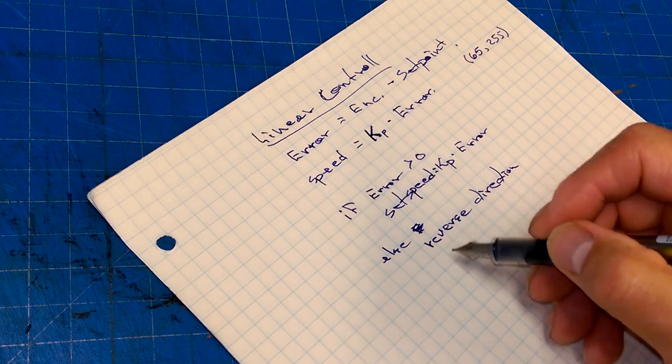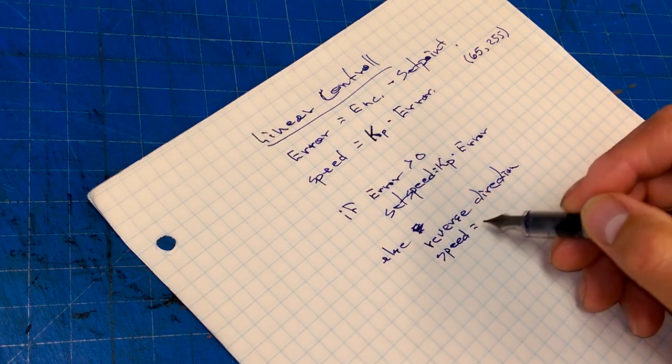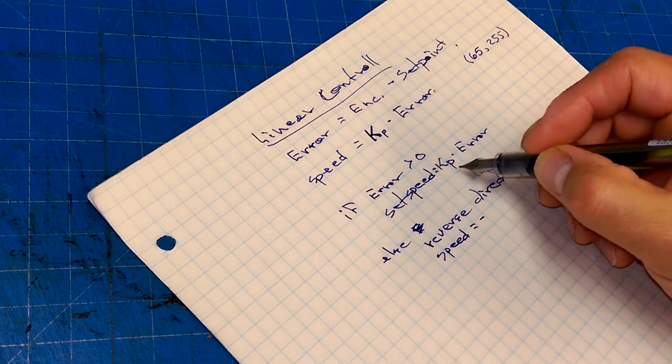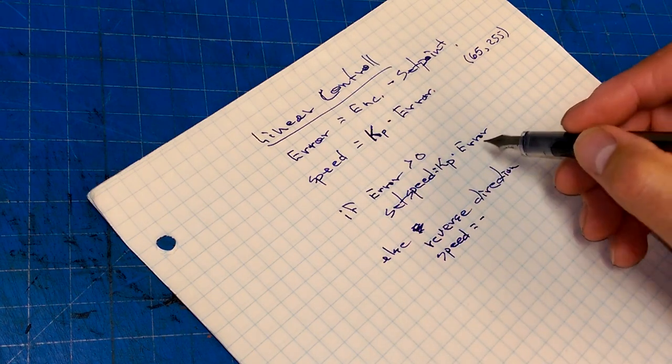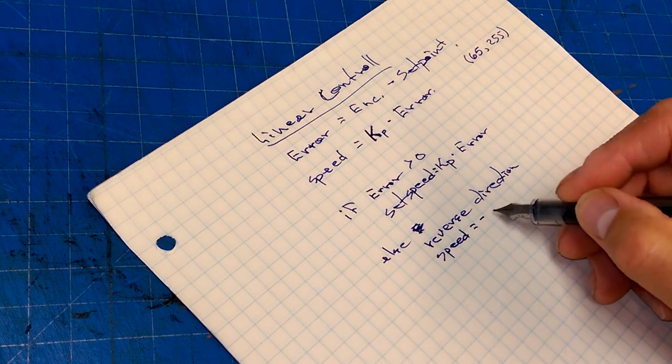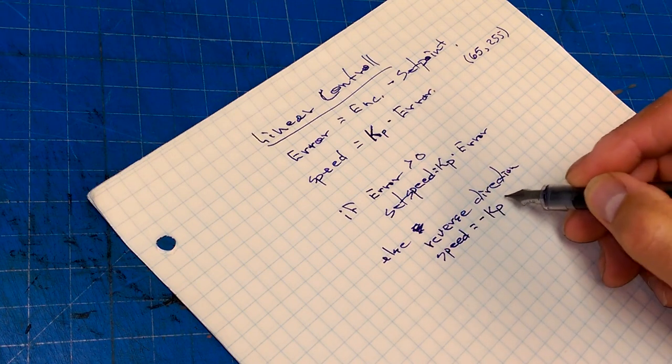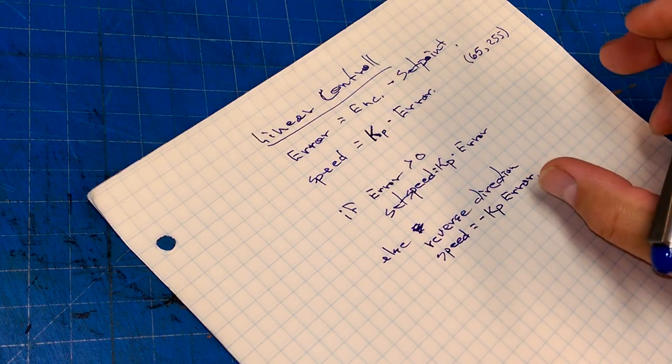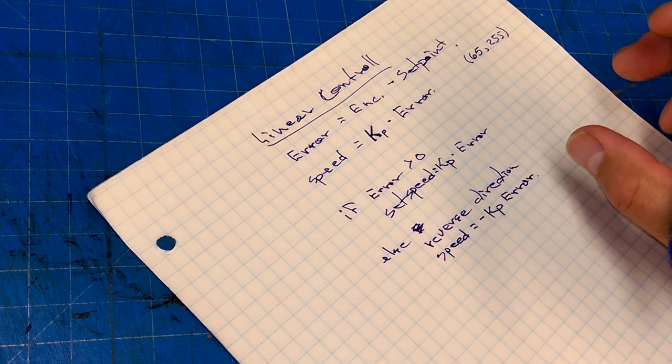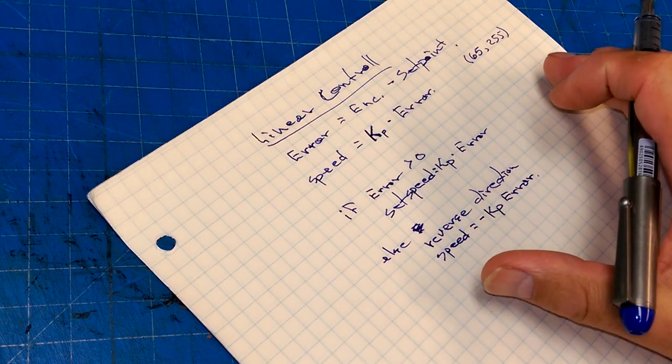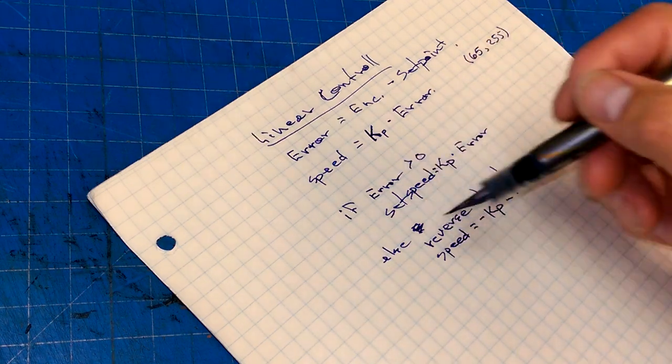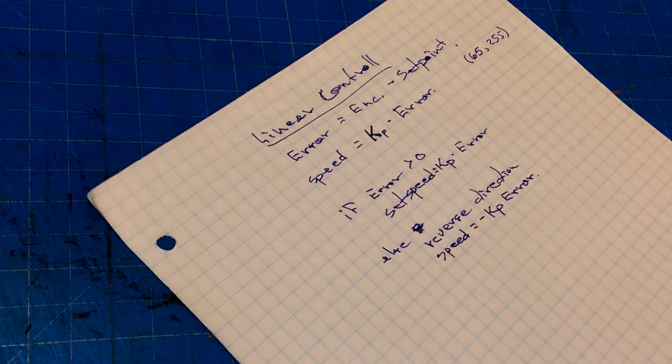Else, error is less than zero or less than or equal to zero. So then we reverse direction and we still make the same speed adjustment to our motor. But we have to remember that since we're setting it to this proportion, since the error is now negative, it's going to be negative Kp times error. And what that will do is it will move fast when the error is big but it will move slow when the error is small. And that's the linear control algorithm.